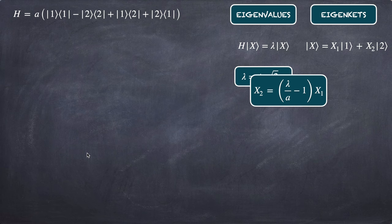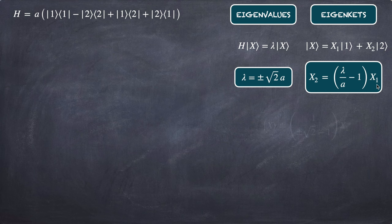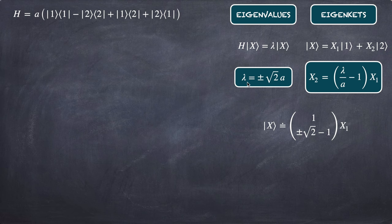From this relation between x₂ and x₁, the eigenkets take the form x₁|1⟩ + (±√2 − 1)x₁|2⟩, because λ/a = ±√2. This gives us the unnormalized eigenkets, and the normalization condition requires the inner product ⟨X|X⟩ = 1.